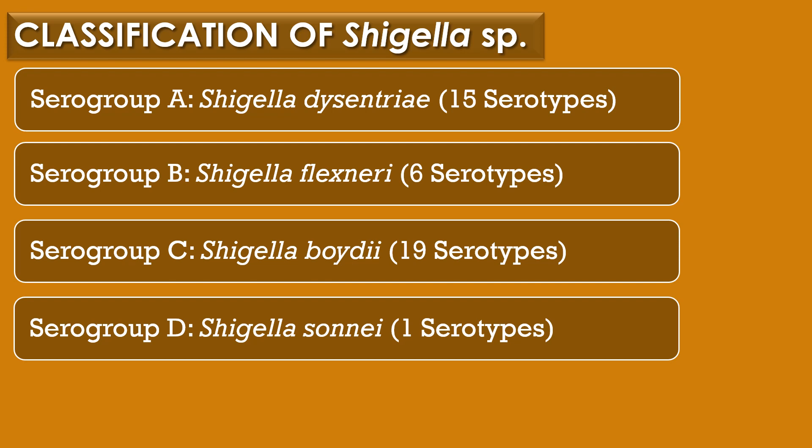Classification of Shigella species. Shigella species are categorized into 4 serogroups: serogroup A, serogroup B, serogroup C, and serogroup D. Shigella dysenteriae belongs to serogroup A and has 15 serotypes. Shigella flexneri belongs to serogroup B and has 6 serotypes. Shigella boydii belongs to serogroup C and has 19 serotypes. Shigella sonnei belongs to serogroup D and has only one serotype. Serogroups A to C are physiologically similar, but serogroup D Shigella sonnei can be differentiated on the basis of biochemical and metabolic assays. Shigella dysenteriae is considered the most virulent strain and can produce a potent cytotoxin known as Shiga toxin.